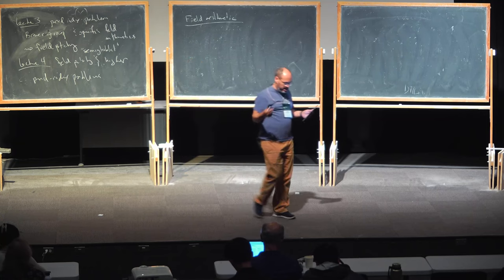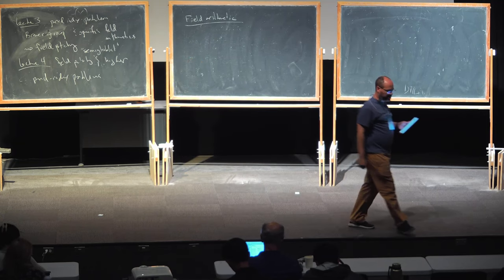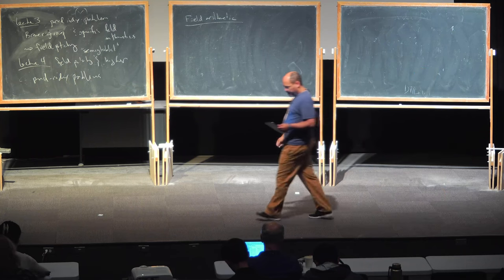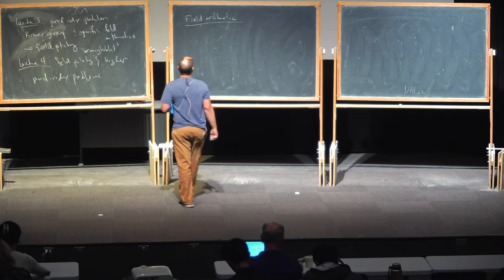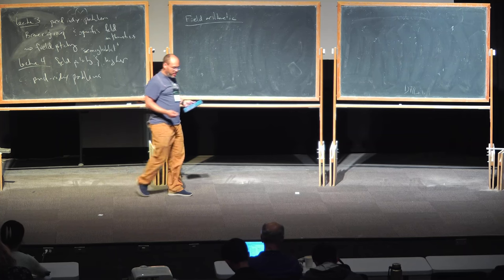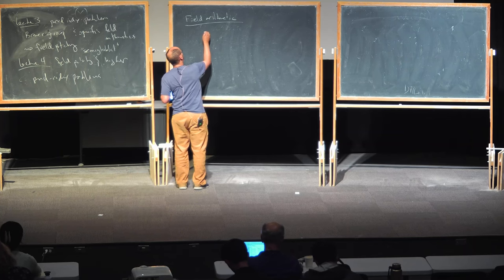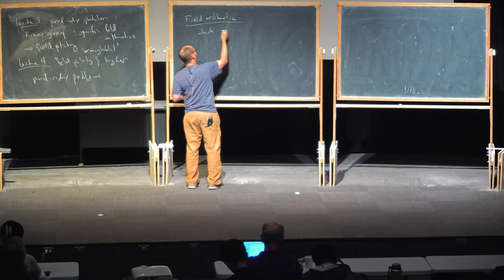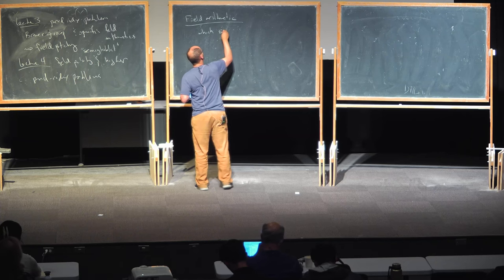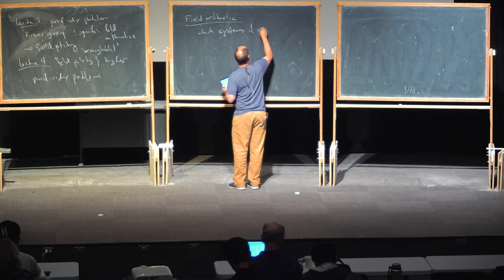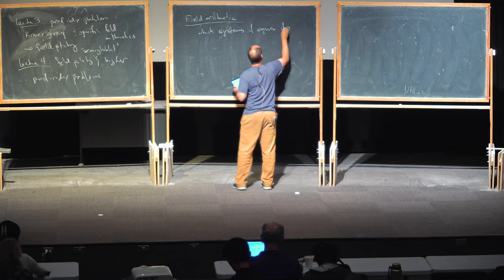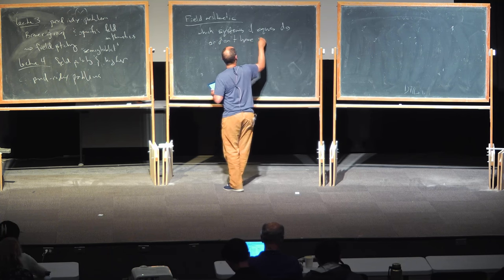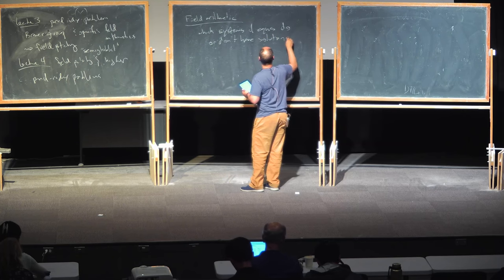The topic is field arithmetic and Galois cohomology. What do we mean by field arithmetic? A reasonable working definition is: to answer the question, which systems of equations do or don't have solutions? Somebody gives you a field, and you're wondering what kind of equations you can solve.